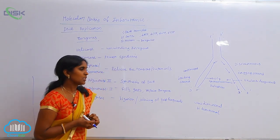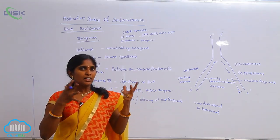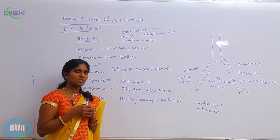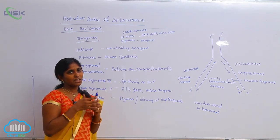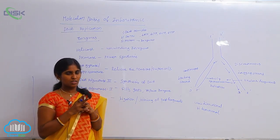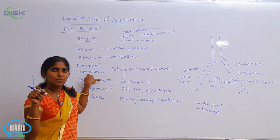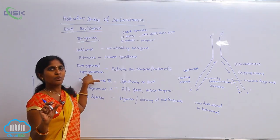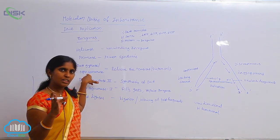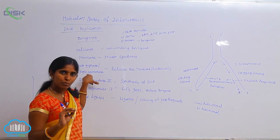Next is DNA gyrase. In eukaryotes, the DNA is larger, so the total DNA does not undergo replication all at once — only a part of the DNA is involved and unwound at a time. While unwinding, supercoils are formed at the two opposite ends. To relax these supercoils, the DNA gyrase enzyme works: it cuts at specific supercoils, relaxes them, makes the DNA linear, and continues the process of DNA replication. The major function of DNA gyrase is to relax supercoiling and promote DNA replication.